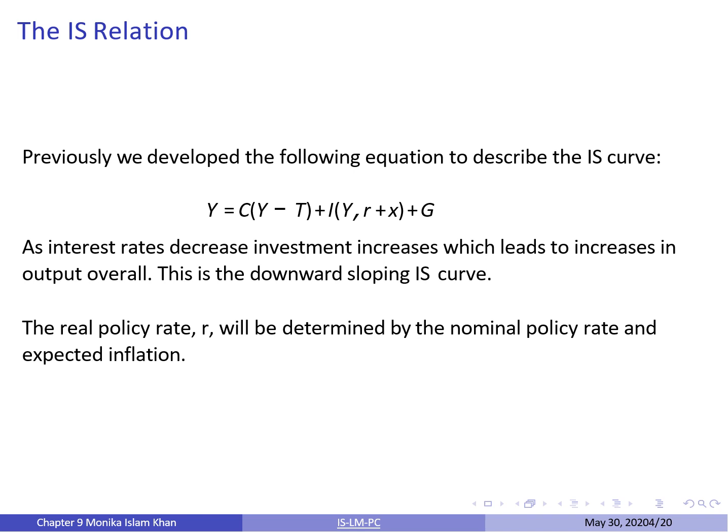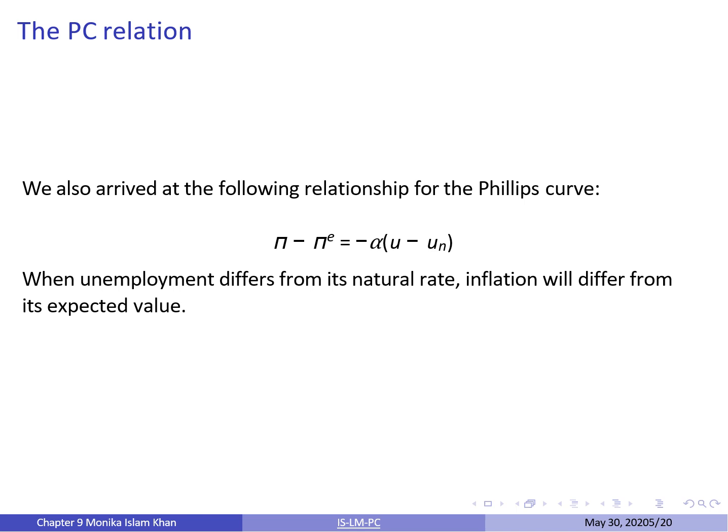As interest rates decrease, investment increases, which leads to an increase in output overall — this is the downward sloping IS curve. Remember that the real policy rate R, which is chosen by the central bank, will be determined by the nominal policy rate and the expected inflation rate.